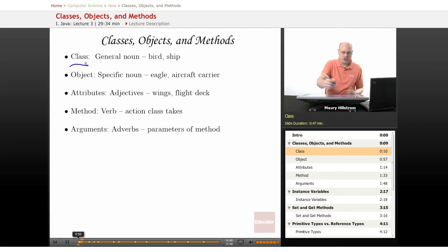So in general class, you might think of that as like a general noun as opposed to a proper noun. So you might think of this as a bird or a ship, for example. If we get more specific, an object within that class might be a specific kind of bird, in other words, an eagle, or a specific kind of ship, an aircraft carrier. So we identify things as objects within their class.